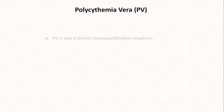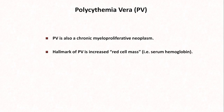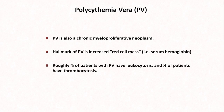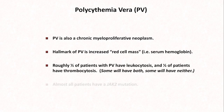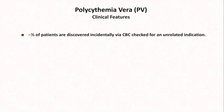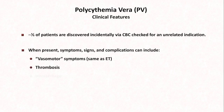Moving on to PV, it is also a chronic myeloproliferative neoplasm. The hallmark of PV is an increased red cell mass, which practically speaking means an increase in serum hemoglobin to above normal levels. Roughly one half of patients with PV also have leukocytosis, and one half have thrombocytosis. Almost all PV patients have a JAK2 mutation responsible for their disease. Symptoms, signs, and complications include some of the same as ET — vasomotor symptoms, thrombosis, and hemorrhage — but there are additional ones seen in PV.